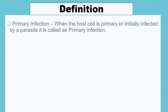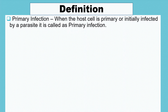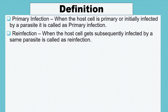The first type is primary infection. When the host cell is initially infected by a parasite, it is called primary infection. When a healthy host cell initially gets infected by a parasite and an infection occurs, that infection is called primary infection.